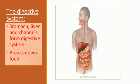Now comes a very important system of your body: the digestive system. It includes organs like the stomach, the liver, and the channels — meaning the esophagus, the food pipe, the large intestine, and the small intestine. All these channels, the stomach, and the liver form the digestive system. The function of the digestive system is to break down food so that it can reach each and every part of your body.